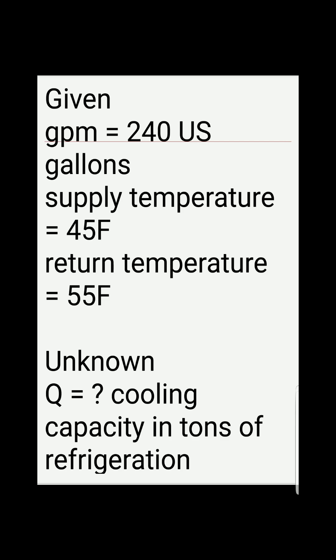So let's look at the given values. We've got the water flow rate in the chiller: 240 US gallons per minute. The supply temperature is the temperature of the water entering the chiller, and the return temperature is the temperature of the water leaving the chiller.